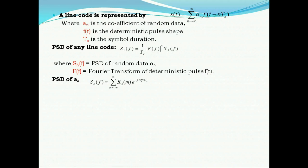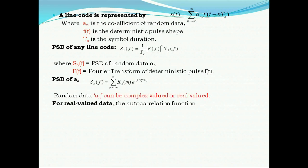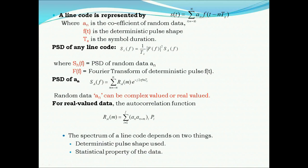The random data An can be complex valued or real valued. For real valued data, the autocorrelation function Ra(m) is given by summation i = 1 to I of An · An+m(i) × Pi, where Pi is the probability of occurrence of random data, An is the current bit, and An+m is the next bit. The spectrum of a line code depends on two things: first, the deterministic pulse shape used, and second, the statistical property of the data.